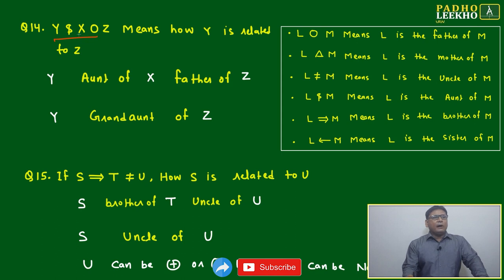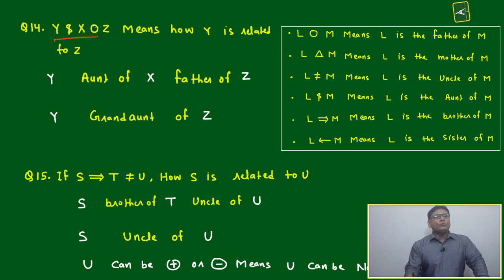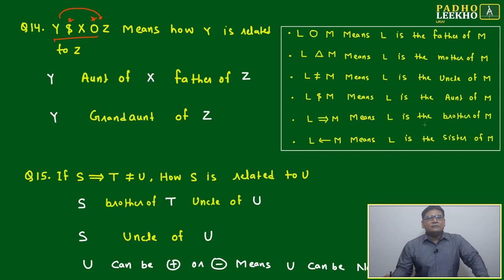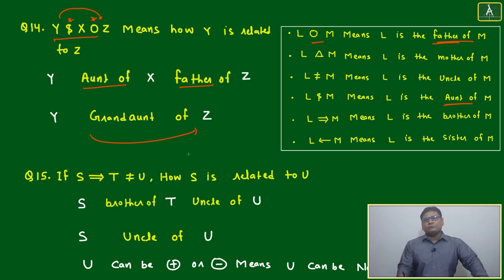Question 14: Y dollar X circle Z means how Y is related to Z. We'll copy paste from the relation. Dollar means aunt of, circle means father of. So Y is the aunt of X, X is father of Z. Then Y is the grand aunt of Z, two generations apart. Question over.